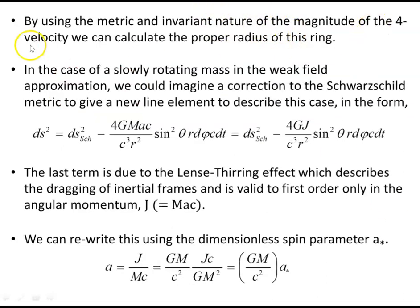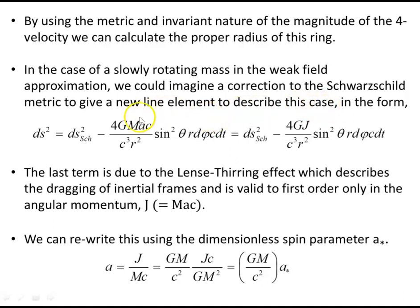By using the metric and the invariant nature of the magnitude of the four-velocity, we can calculate the proper radius of this ring. In the case of a slightly rotating mass in the weak field approximation, we can imagine a correction to the Schwarzschild metric to give a new line element. So we took the Schwarzschild metric and corrected it with a cross term. This cross term was added to the Schwarzschild metric to create the new Kerr metric. You'll see all that in the derivation videos at the beginning of the Kerr series.